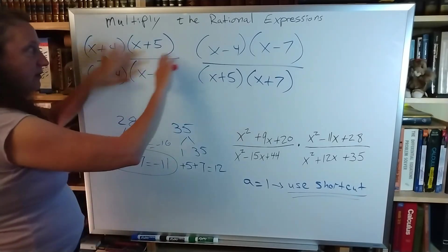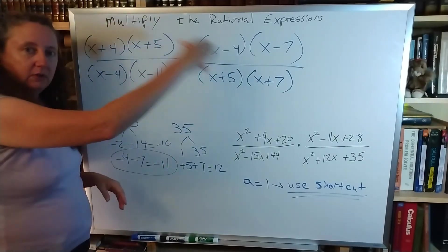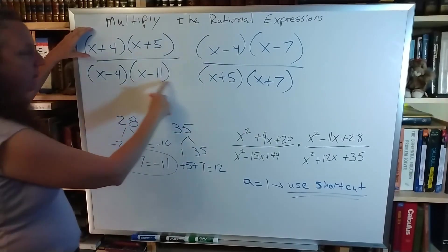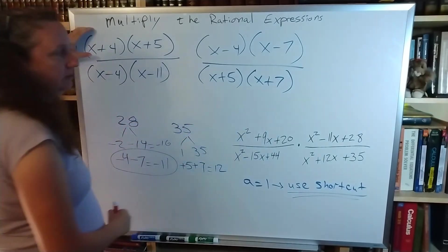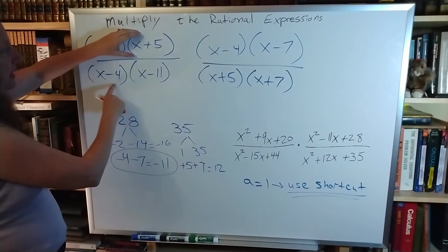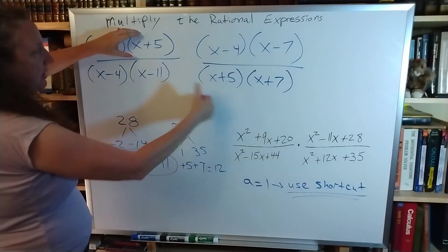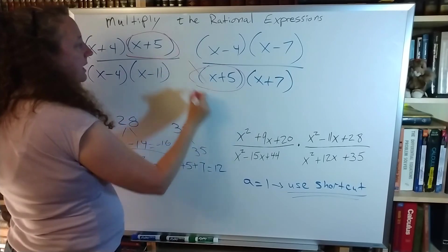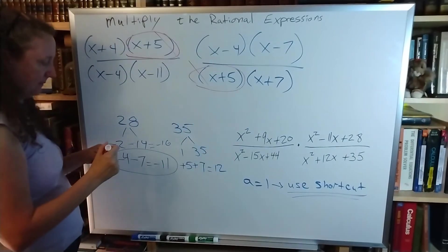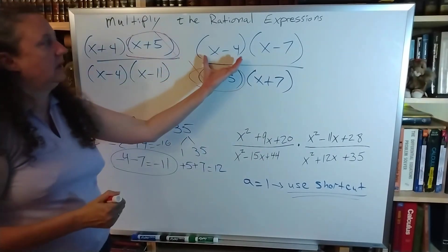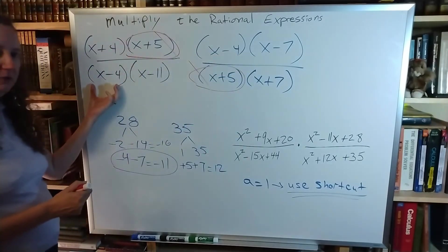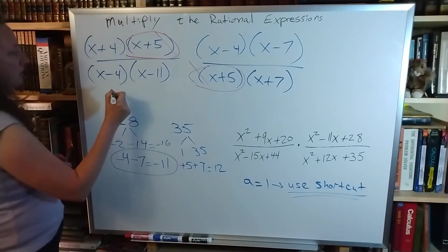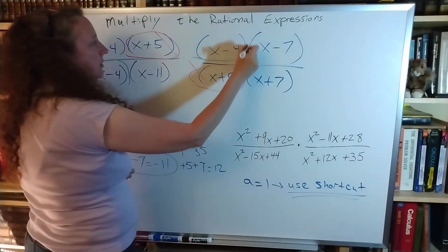Now that everything is factored out, now I can start canceling. So I have an x plus 4 here. Do I have any x plus 4s on the bottom? No. I have an x plus 5 here. Do I have any x plus 5s on the bottom? Yes. So this and this will cancel each other out. x minus 4. I have an x minus 4 here. So these two will cancel each other out.